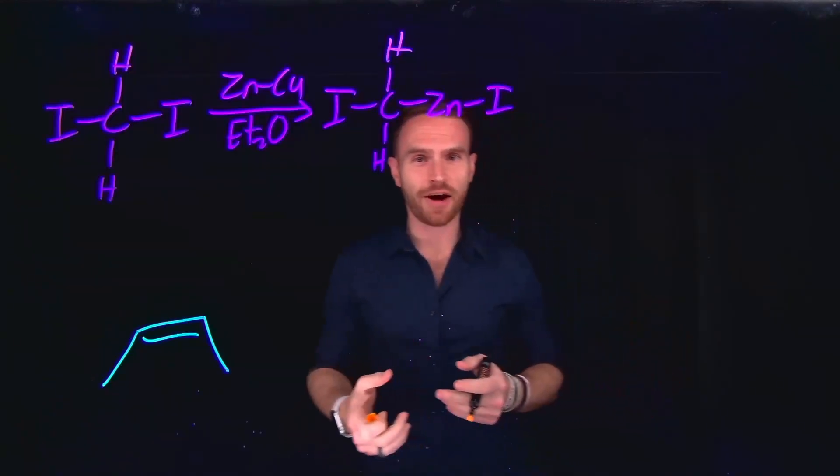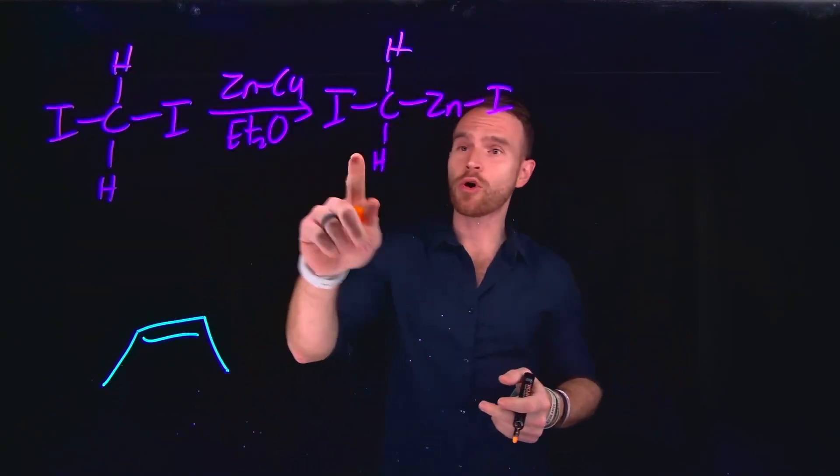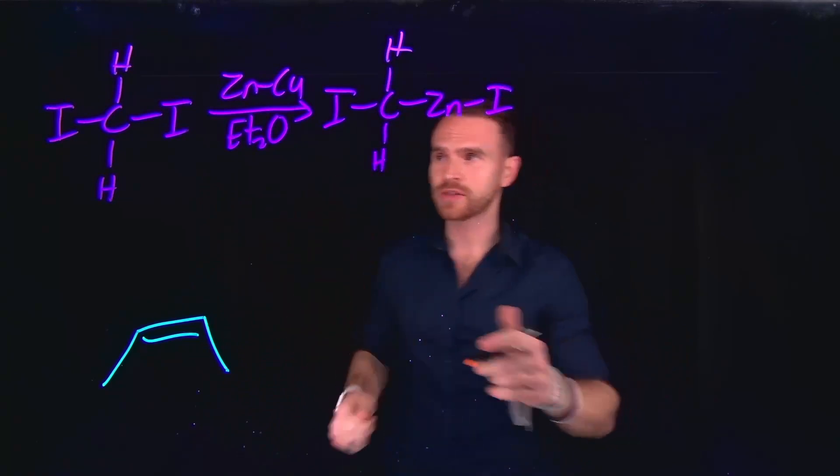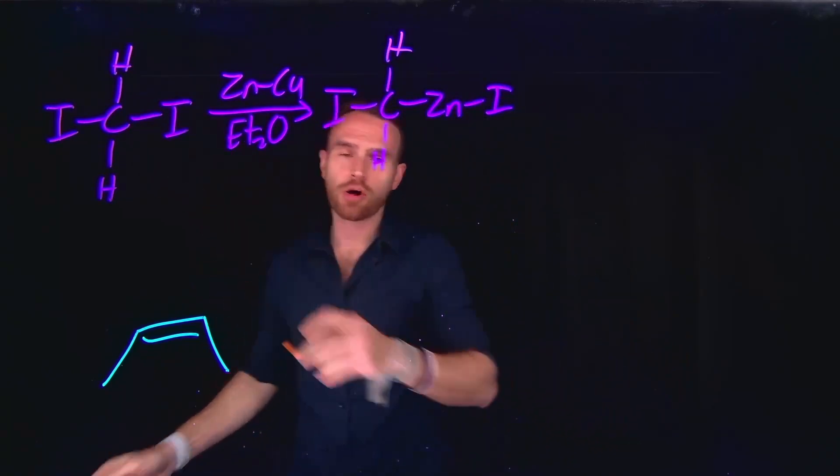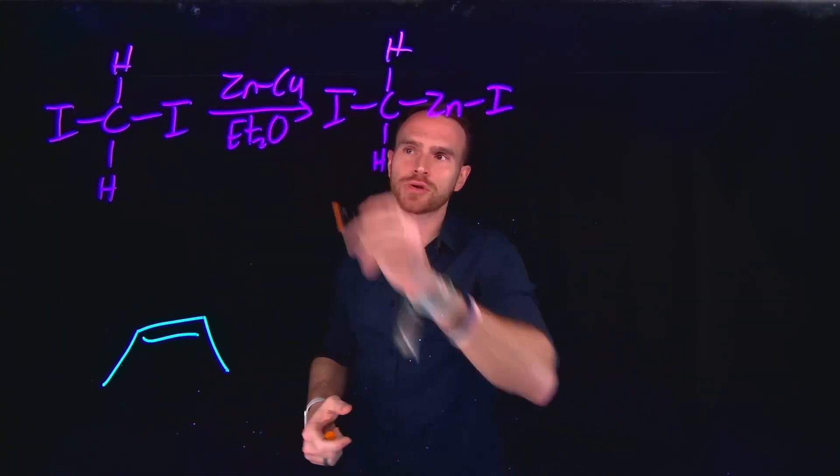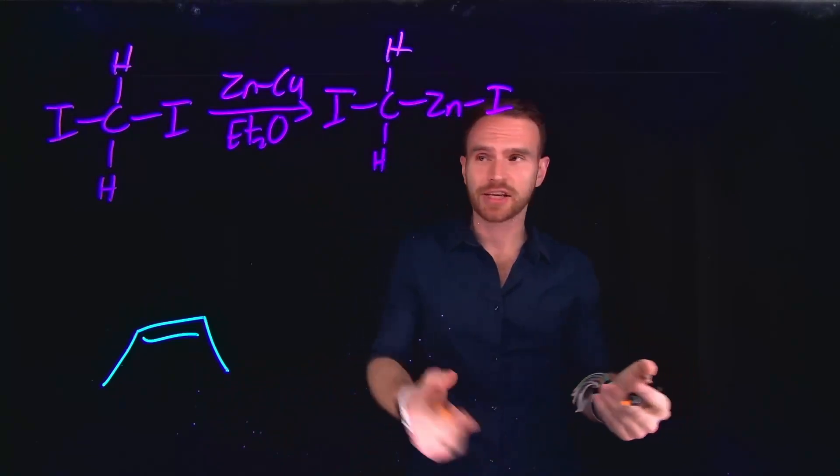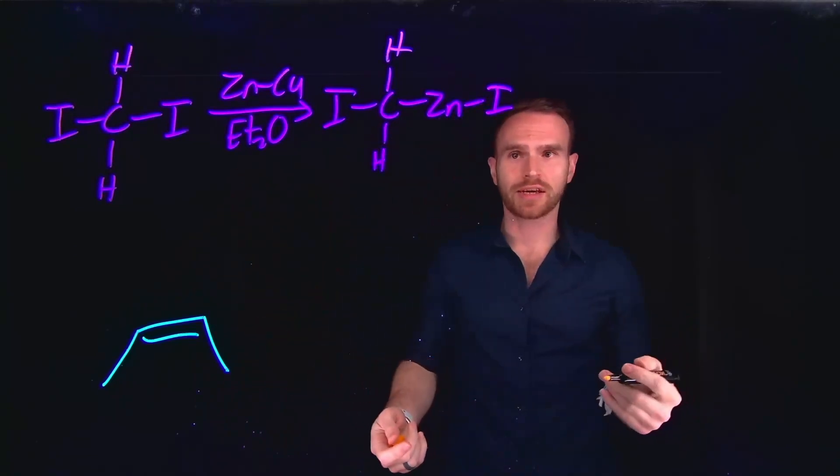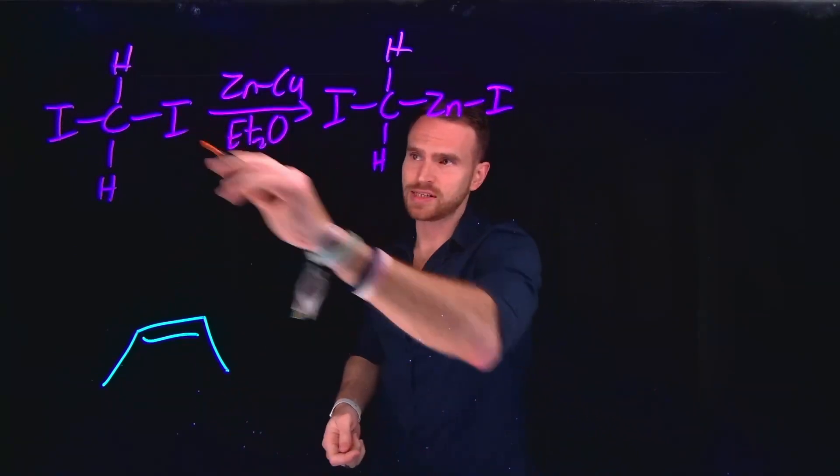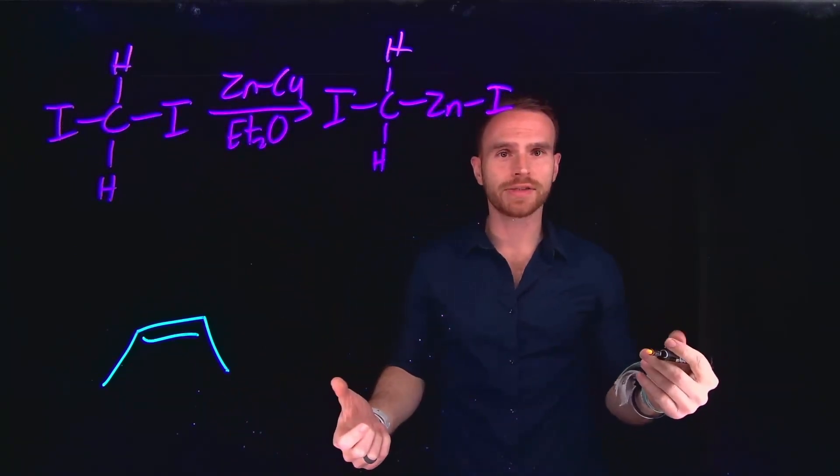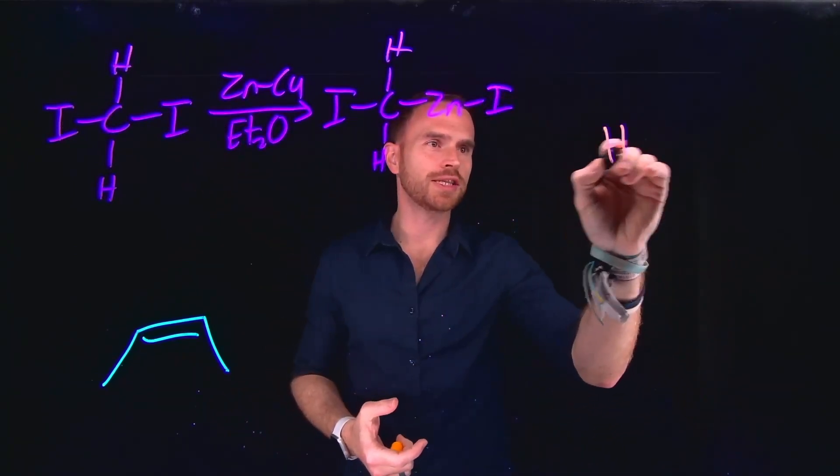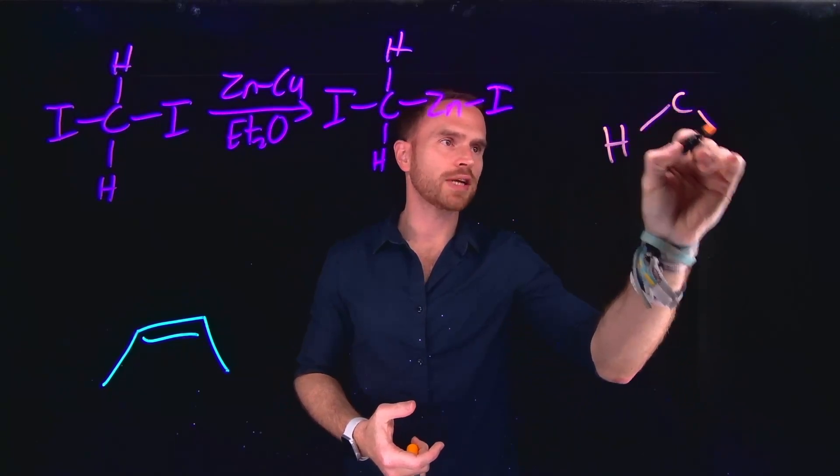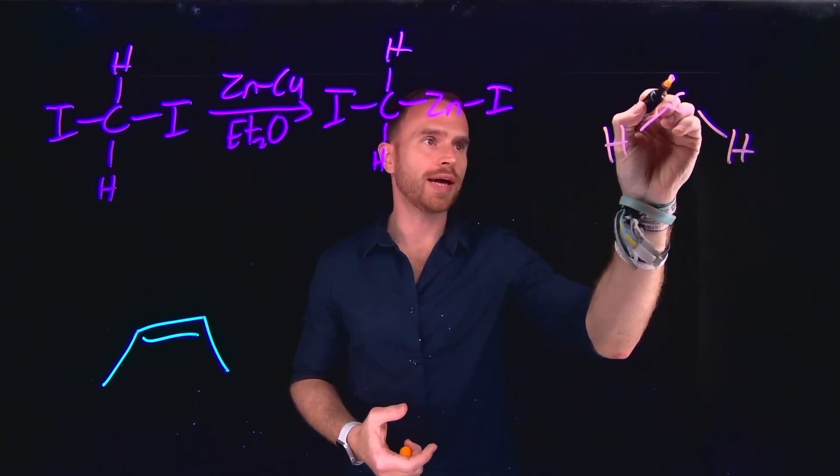The last class of organometallic compounds that I'd like to cover in this video are organo-zinc compounds. What happens is you take a carbon with two iodines on it, introduce it to a reagent that contains zinc and copper and diethyl ether, and this generates our new organo-zinc compound, where the zinc inserts into one of the carbon-to-iodide bonds.